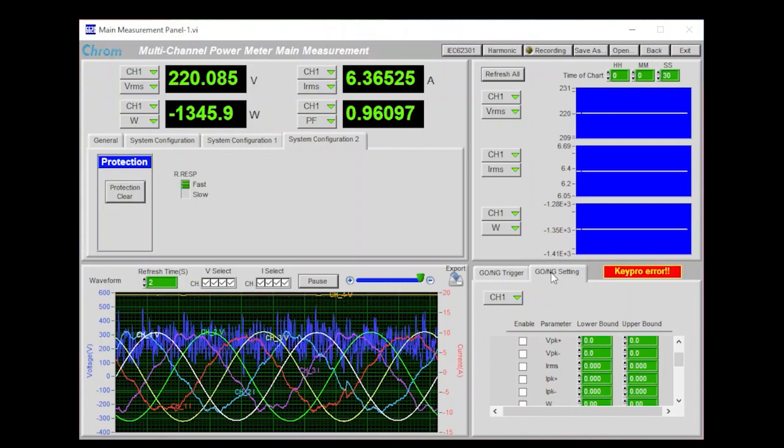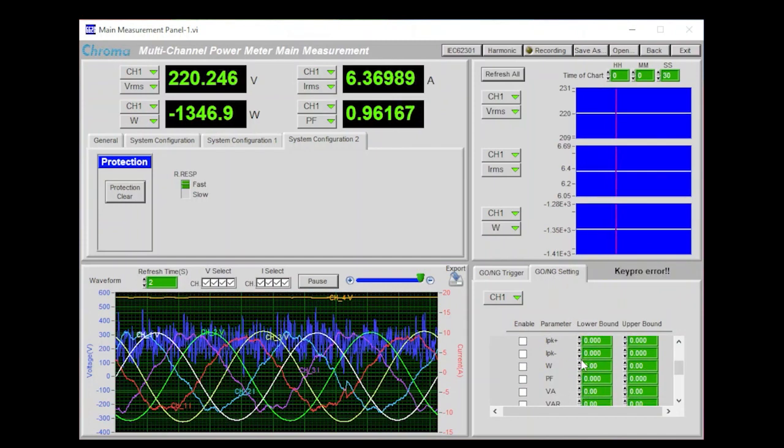Under GO and NG settings, we can input a specification range to judge the DUT as pass or fail for the selected channel.